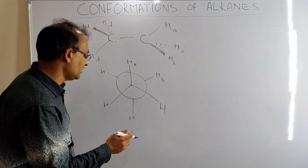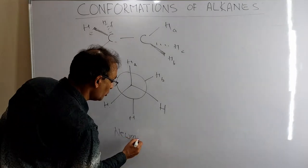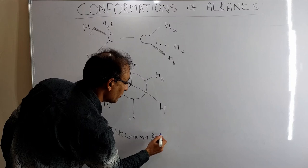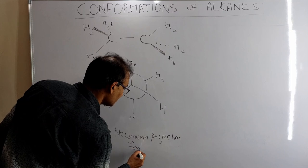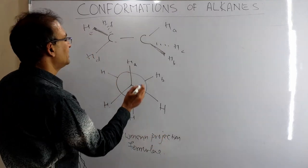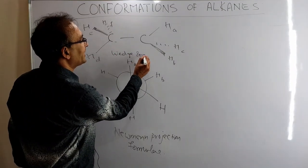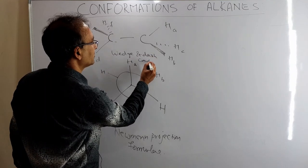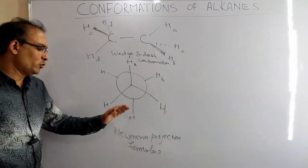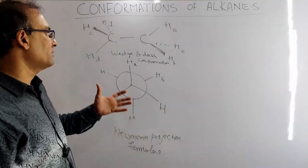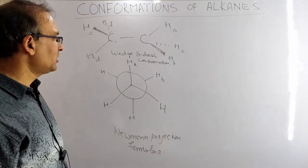This way of projecting a molecule is called the Newman projection formula. The other representation is called the wedge-and-dash conformation. We are using the Newman projection because it is easy to understand, but you should be comfortable converting between the two. We will definitely do one or two more practice problems for that.